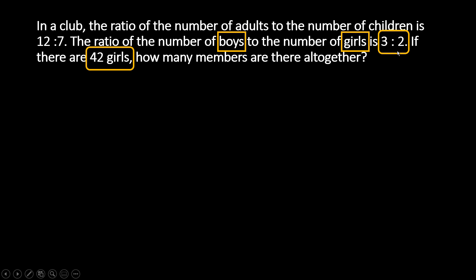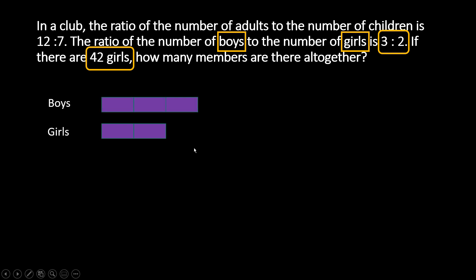Boys is to girls, the ratio is given as 3 is to 2. So boys correspond to 3 and girls correspond to 2. So girls have 2 units and boys have 3 units. Now if there are 42 girls, they have just given away the answer here. This 2 units here is 42.